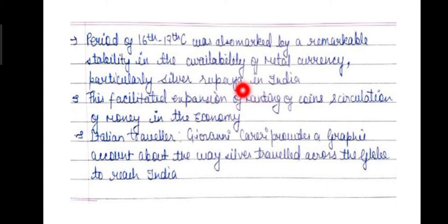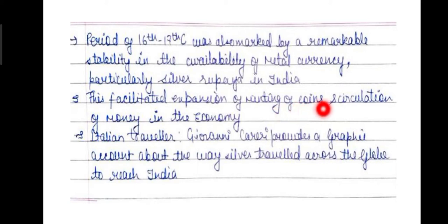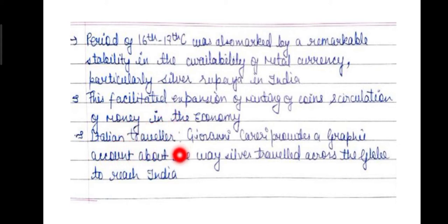Silver coins — particularly the silver rupee — came into use in India and other parts of the world. This facilitated the expansion and minting of coins and the circulation of money in the economy. Earlier, the economy largely ran on a barter system, before the introduction of coins. The Italian traveler Giovanni Careri provided a graphic account of the way silver traveled across the globe to reach India.